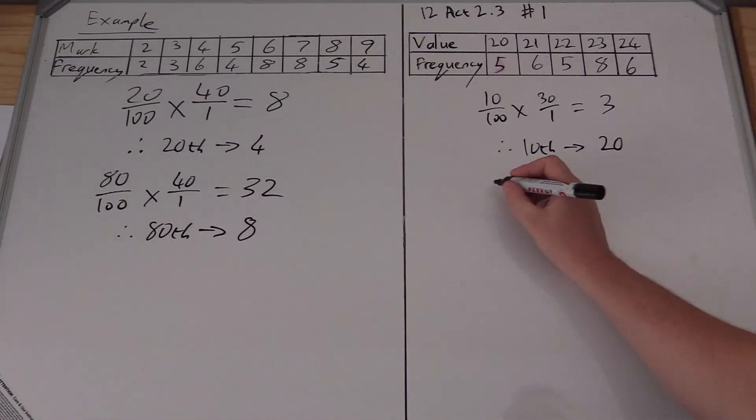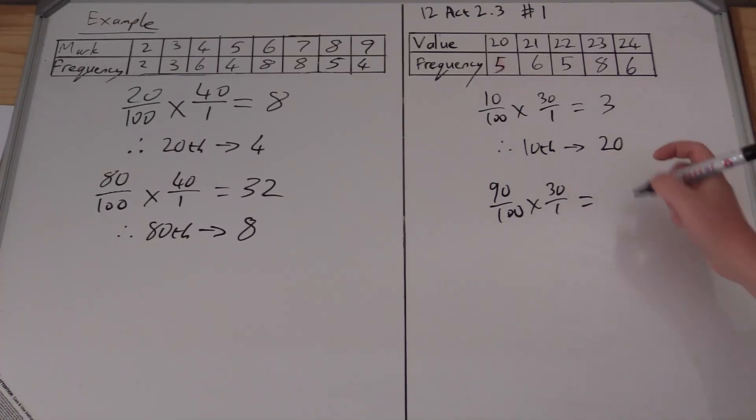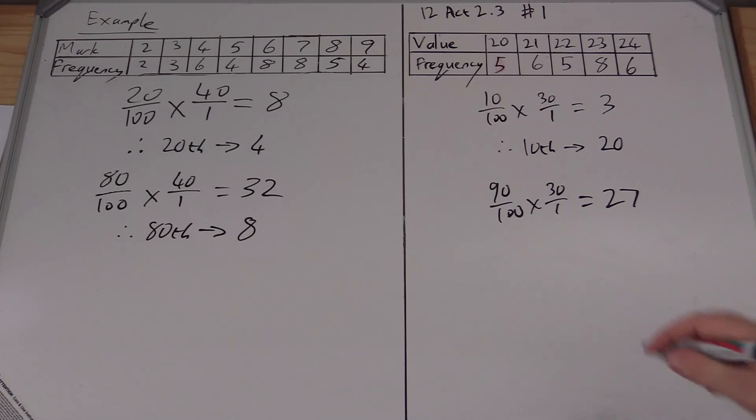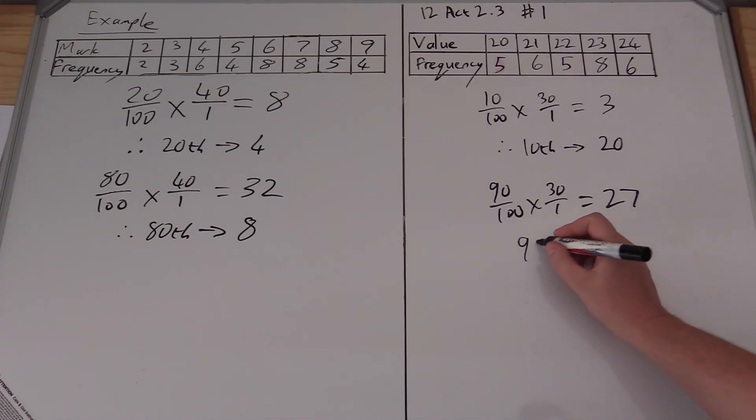In the same way, I'm looking for my 90th percentile. So 90 over 100 times 30 over 1, that is going to give me my 27th position. And the 27th position, 5, 11, 16, 24, more than 24 is a value of 24. So my 90th percentile is going to be a value of 24.